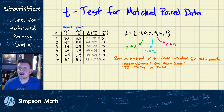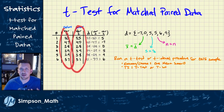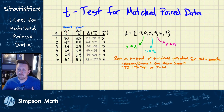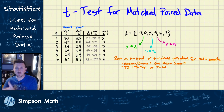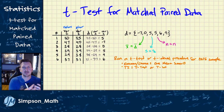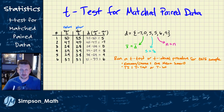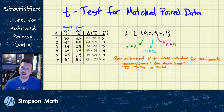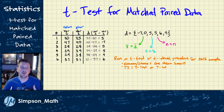A matched pairs test looks like we have two samples, but in reality those two samples are actually paired together. For example, it could be a weight loss regimen where you take someone's weight before, put them through the regimen, then take their weight after and see if there was a significant difference — comparing before versus after.